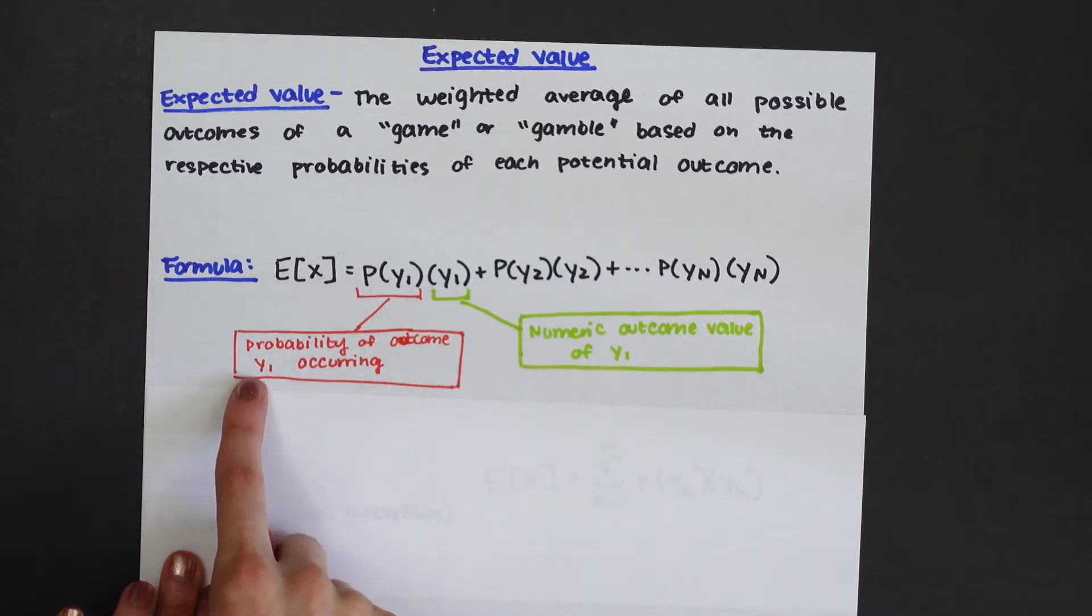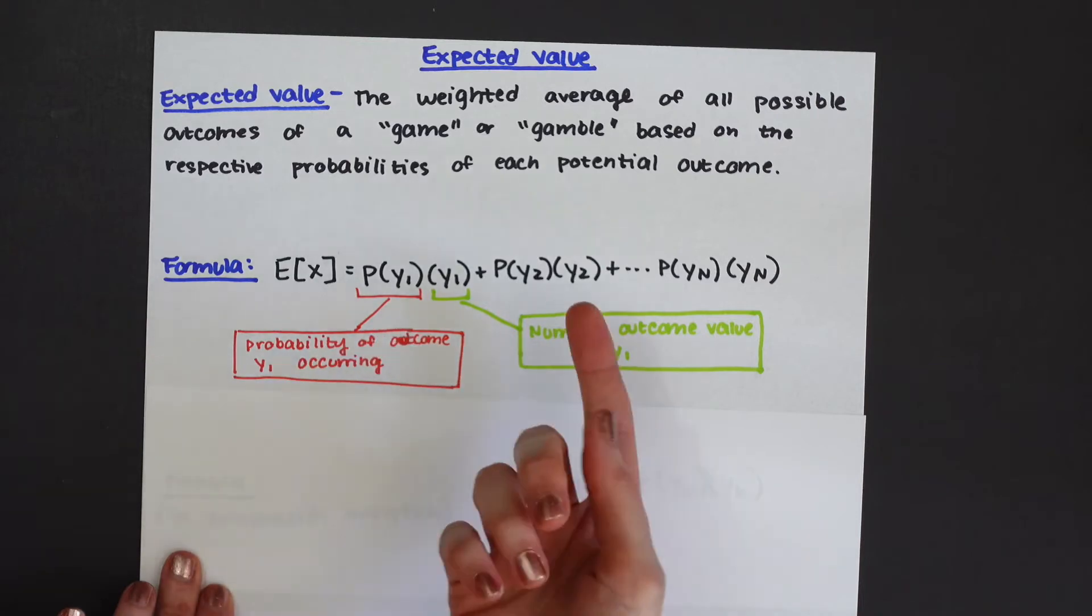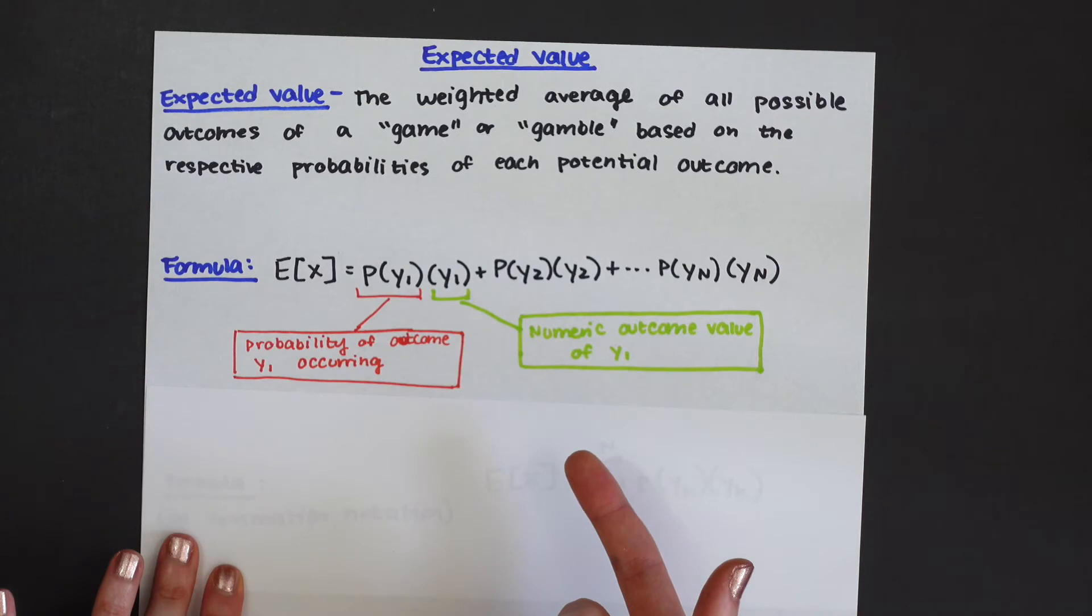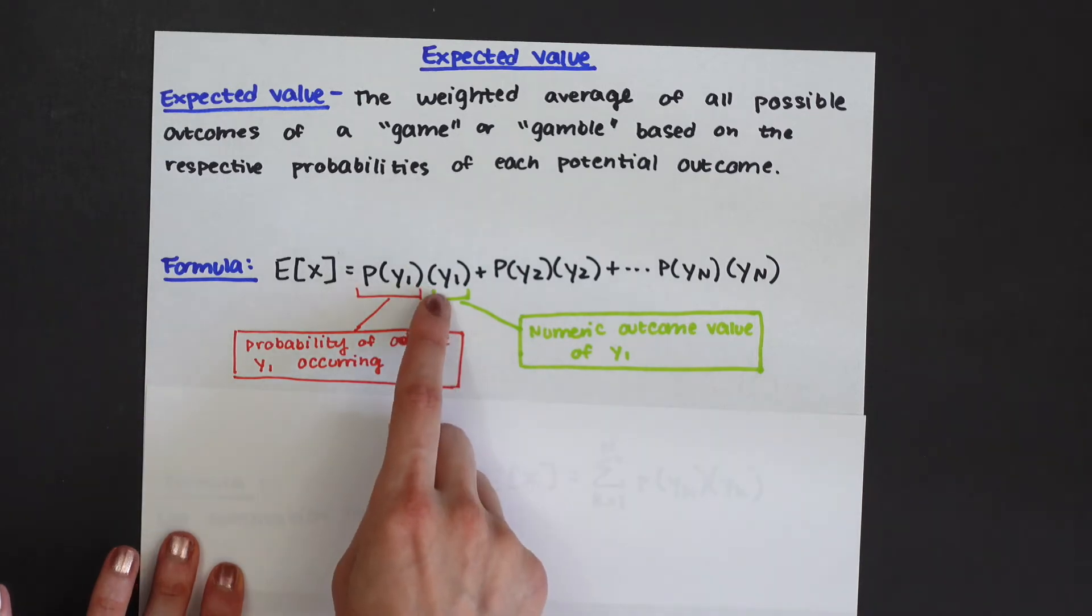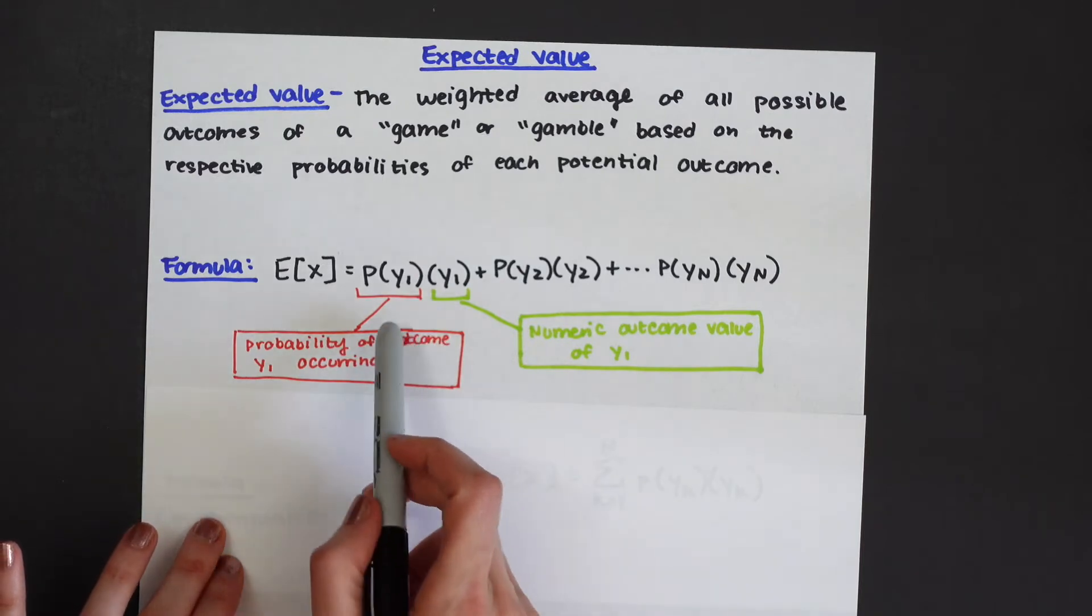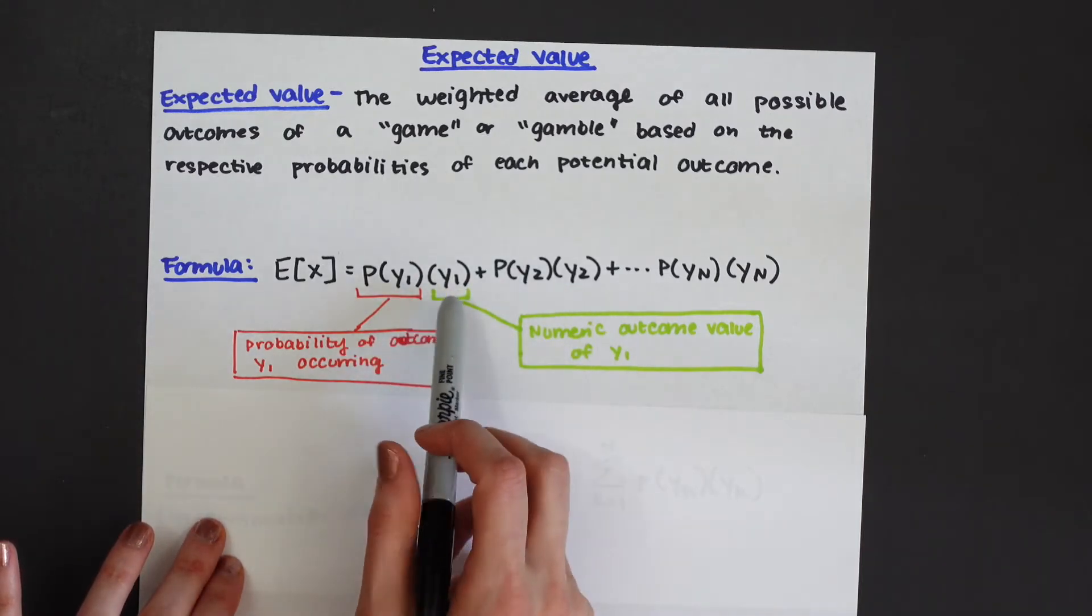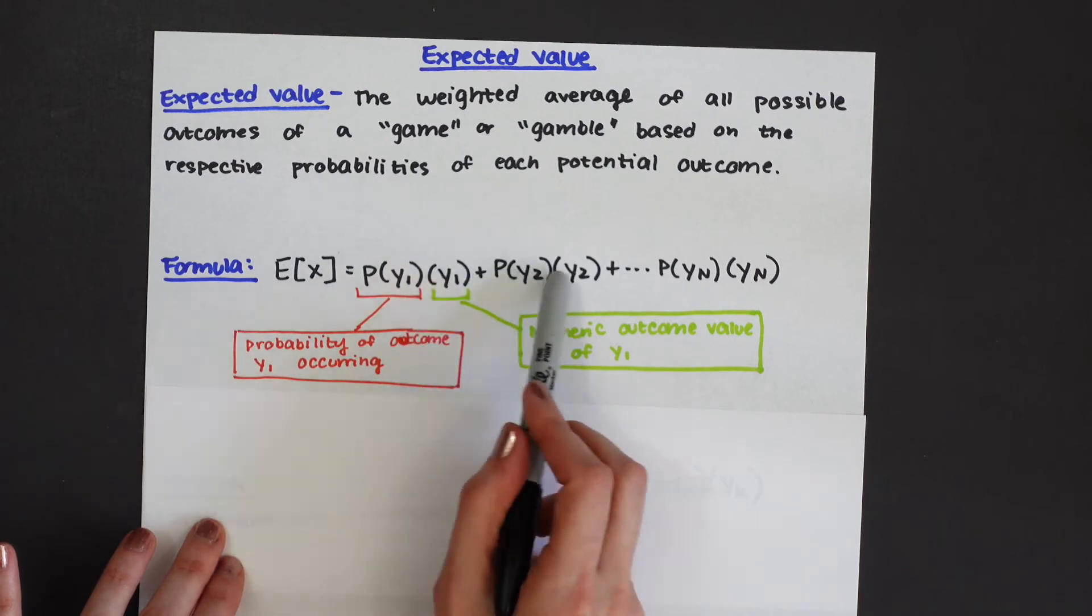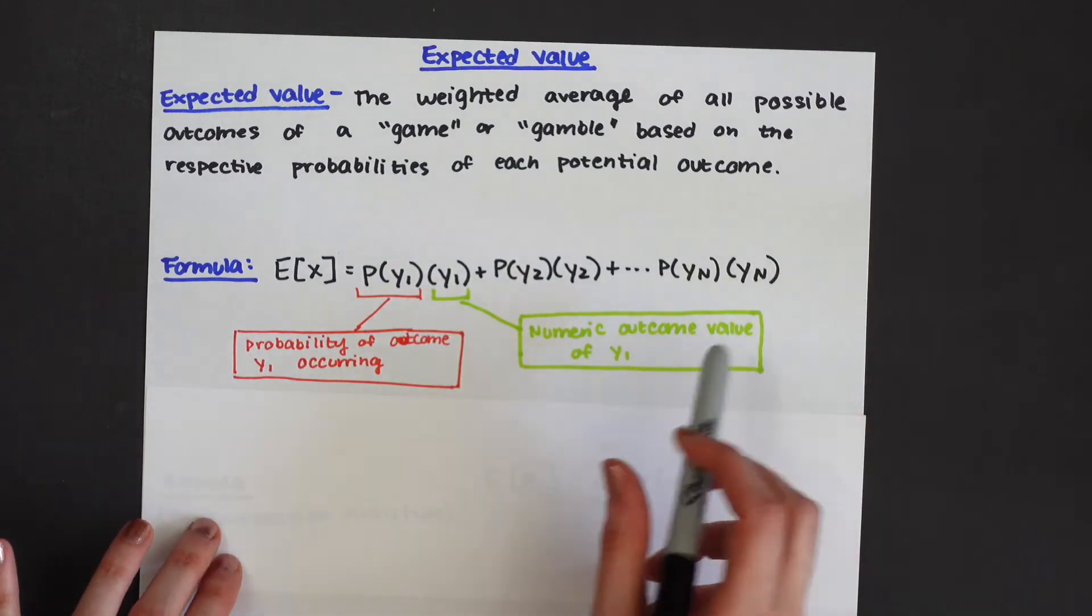Just think of y1 as like rolling a one on a die times y1. So this is a numeric outcome value of y1. That would just be like one for rolling a die and landing on one. These just represent different potential outcomes and when there's a P next to it it represents the probability and then here represents the actual value of the outcome.